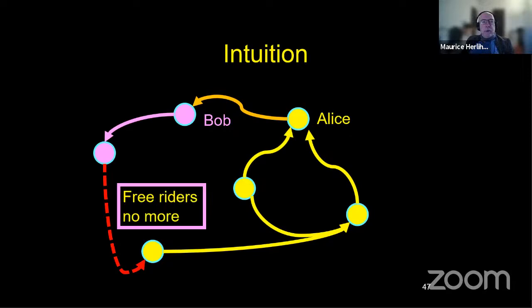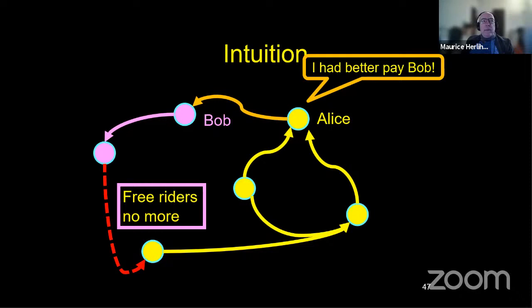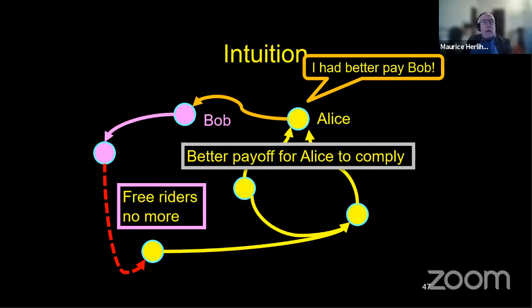So this kind of a thing doesn't make any sense. So if we make the graph strongly connected again, then the pink nodes are not free riders anymore because they're paying for the privilege of joining in the protocol. And Alice says, well, I better pay because if I don't pay, then bad things will happen. The whole thing will probably abort and no assets will change hands and no one will be better off because that pink region of the graph that was formerly disconnected is now connected and it can withhold something that Alice wants. So it's a better payoff for Alice to comply. And this is what we want.